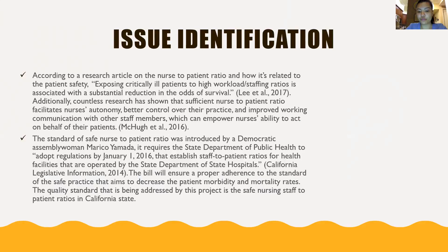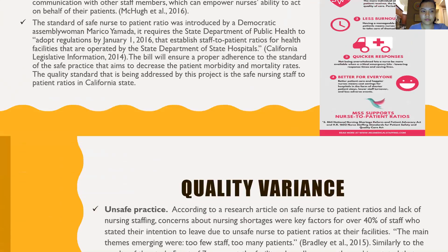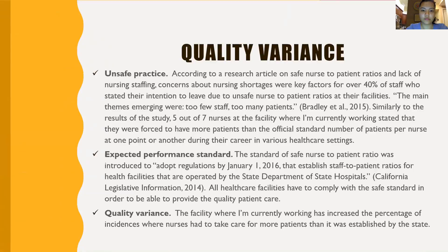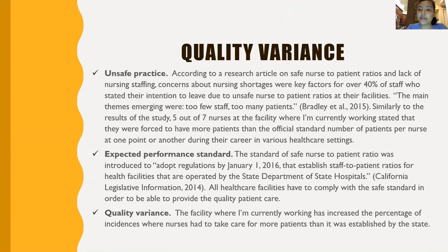Here are four simple reasons why nurse-to-patient ratios matter. The first quality variance is unsafe practice. According to research on safe nurse-to-patient ratios, nursing shortages were key factors for over 40% of staff who stated their intentions to leave due to unsafe nurse-to-patient ratios at their facility — the main themes being too few staff and too many patients, according to Bradley. Similarly, five out of seven nurses at the facility where I'm currently working stated they were forced to have more patients than the official standard number at one point or another during their career.